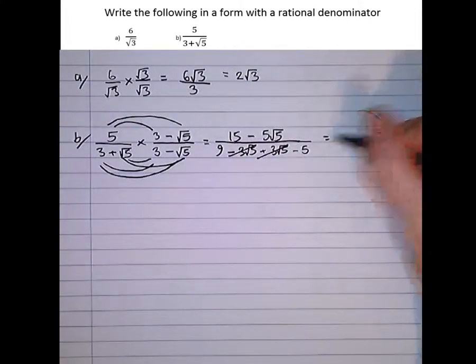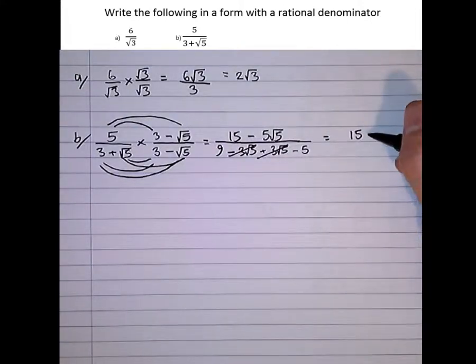Right, simplifying this, the top's as simple as it gets: 15 minus 5 root 5. And on the bottom, 9 minus 5 is 4.